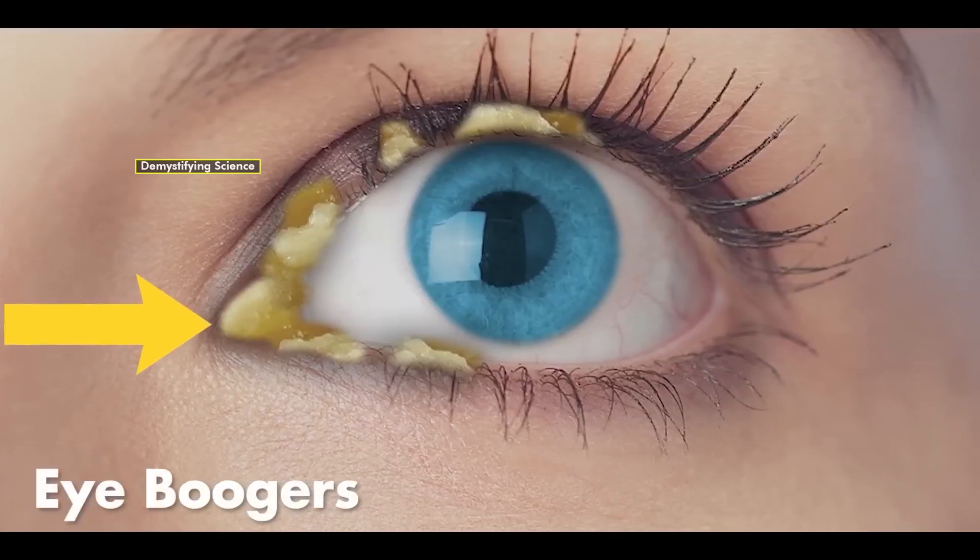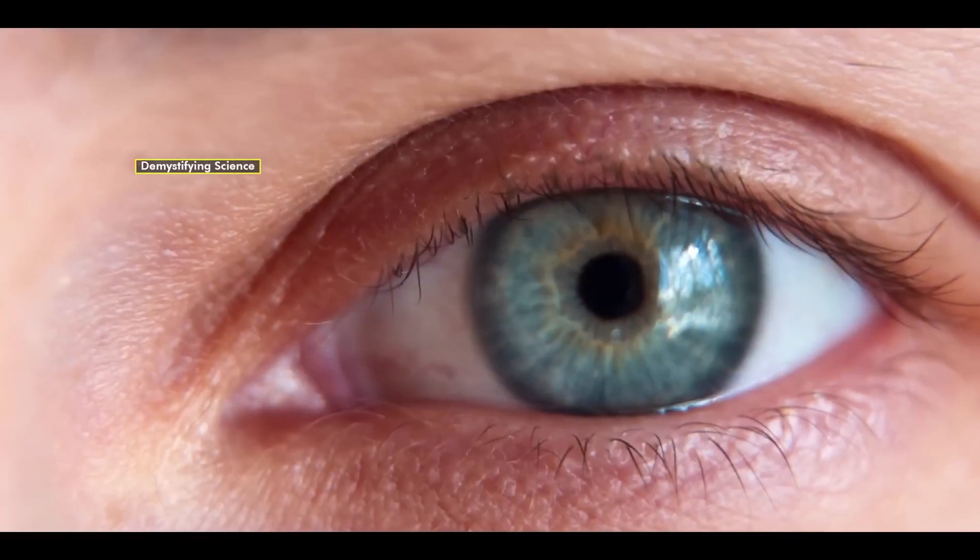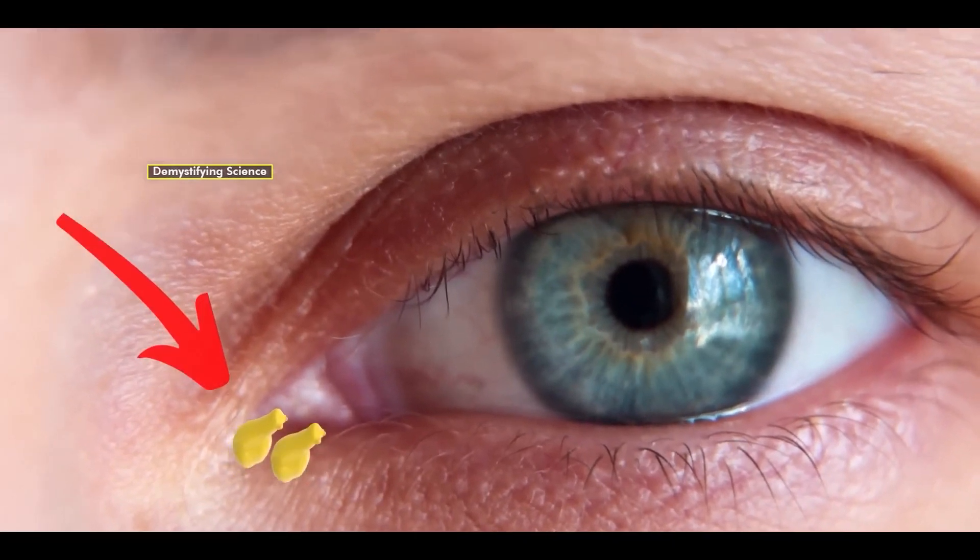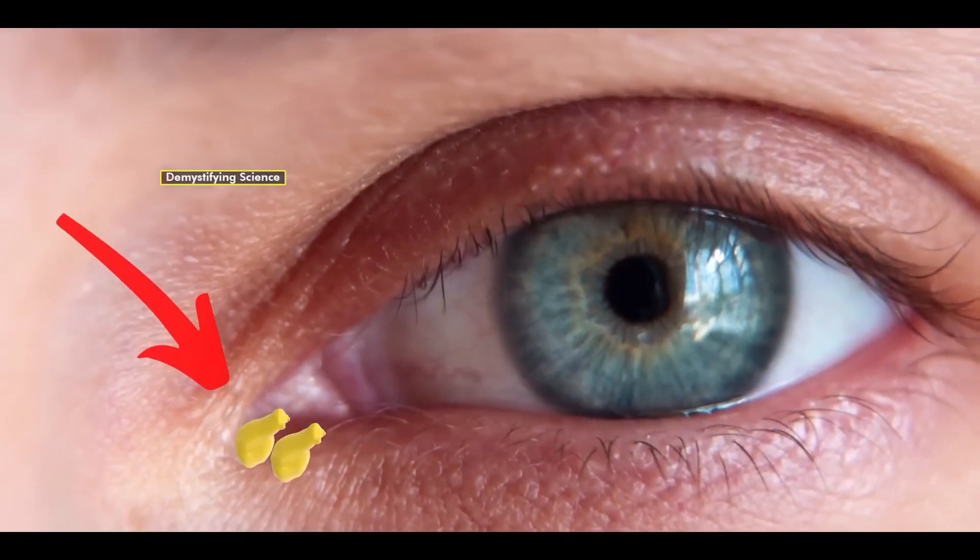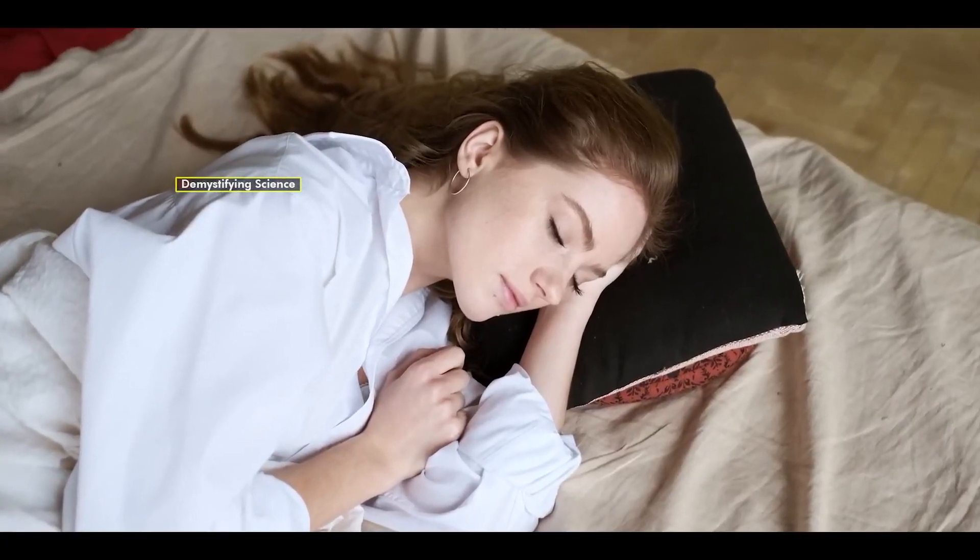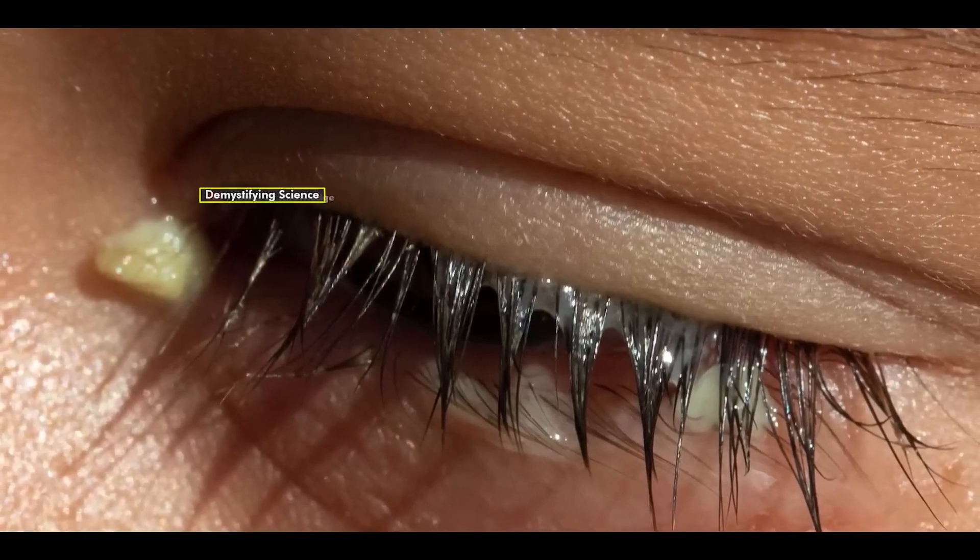Eye boogers, also known as eye goop or eye gunk, are the small yellow particles that accumulate in the corners of our eyes. They often gather during sleep and can become thick and crusty by morning.